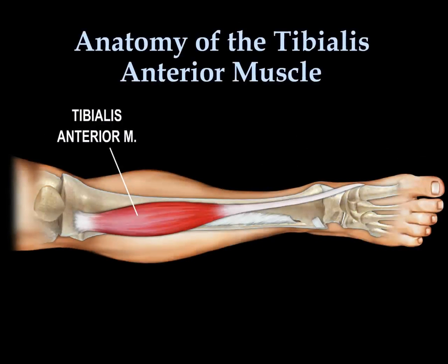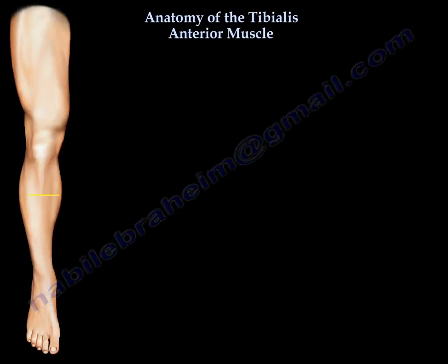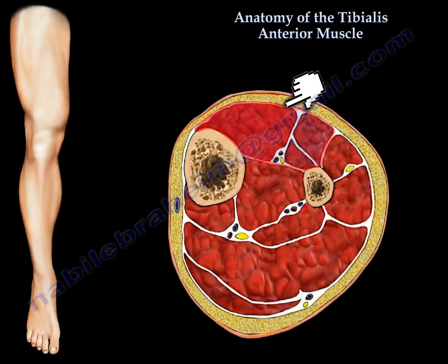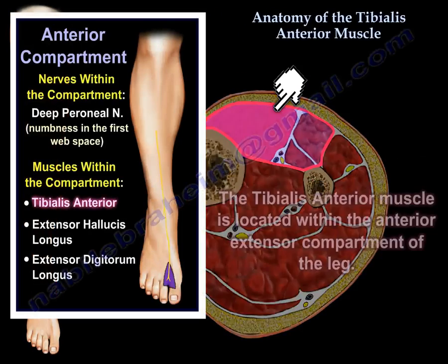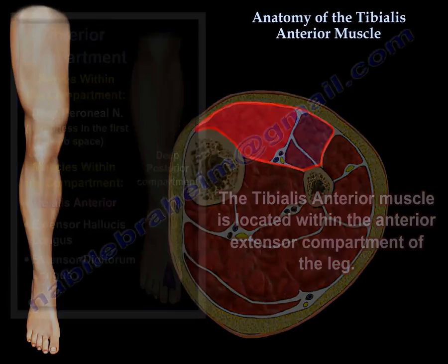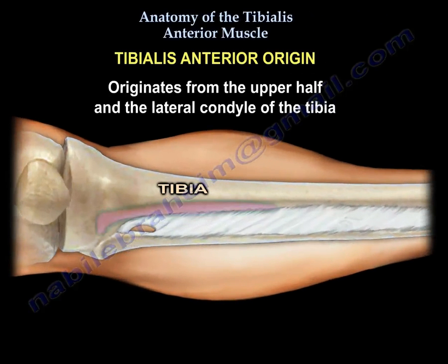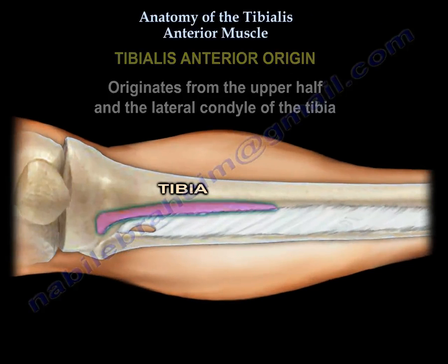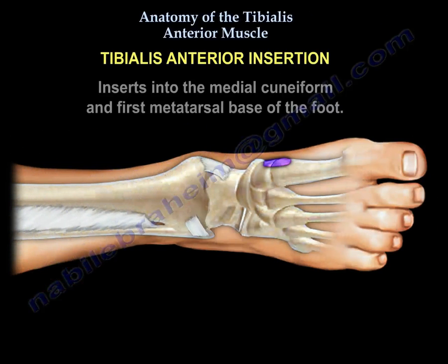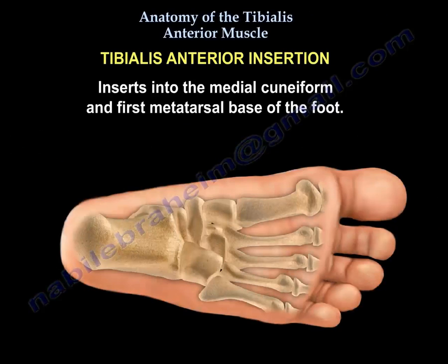The tibialis anterior muscle is located within the anterior extensor compartment of the leg. It originates from the upper half and the lateral condyle of the tibia. The tibialis anterior inserts into the medial cuneiform and the first metatarsal base of the foot.